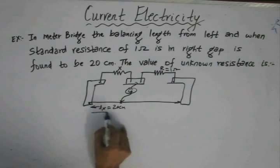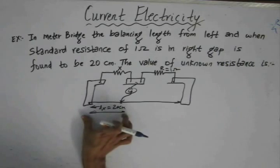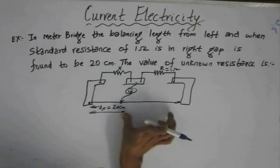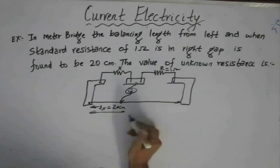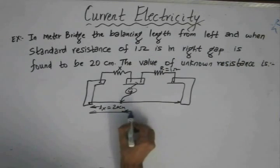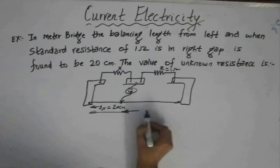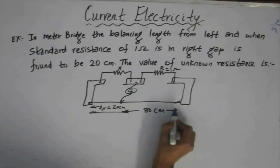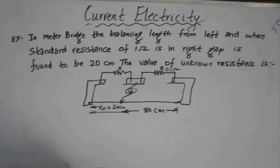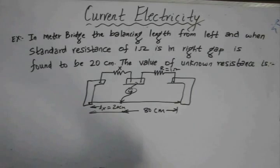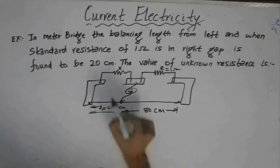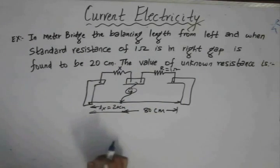From the left end, we have a distance of 20 centimeters — that is the balancing length. That means at the right end, the balancing length would be 100 minus 20, which is 80 centimeters. These are the parameters given to us, and from this we have to determine the value of the unknown resistance.